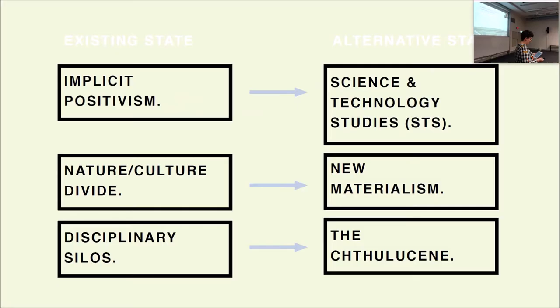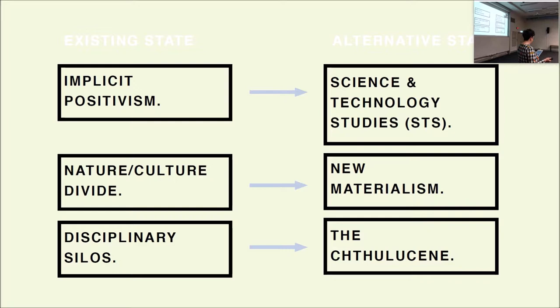I wanted to start off by problematizing three existing states or paradigms that are prevalent across industry and government, and which define the ways landscapes are understood and therefore their capacity for reinvention. In doing so, I'm not trying to position these things as specifically bad, but to think through the ways in which their dominance has overtaken other kinds of thinking. I want to argue that existing approaches to landscape design and planning are often approached from a flat position, similar to the one-metre and ten-metre images of the people on a picnic rug. I will then present three alternative paradigms at the forefront of research in human geography and environmental humanities, arguing that these methods can help to zoom in or out of the people on the picnic rug to show configurations more difficult to view.